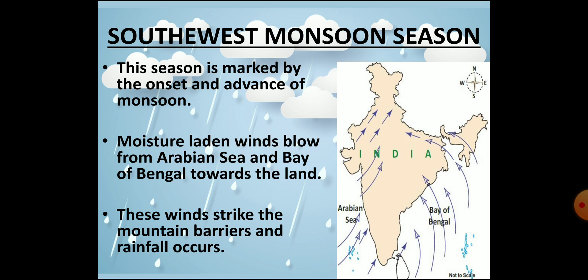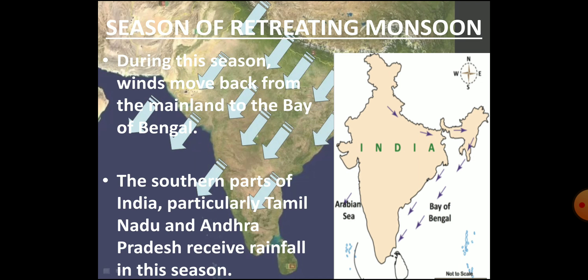Next in the cycle is the southwest monsoon season that lasts from June to September. The moisture-laden winds of southwest monsoon enter India from the Arabian Sea and the Bay of Bengal. The onset of southwest monsoon occurs each year around the first week of June, and by 15th July, the entire country comes under the spell of monsoon. Then comes the season of retreating monsoon or autumn. By early October, the monsoon starts withdrawing from North India. The retreating monsoon brings heavy rainfall to Tamil Nadu and parts of Andhra Pradesh, Karnataka and Kerala.